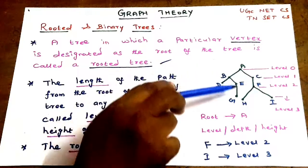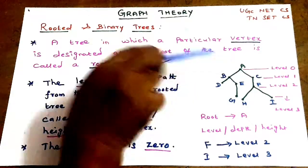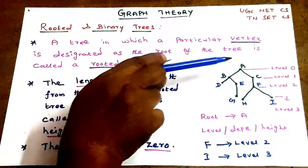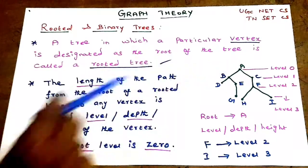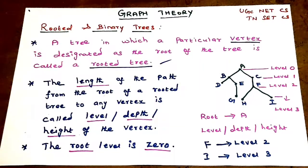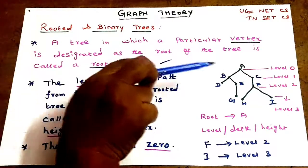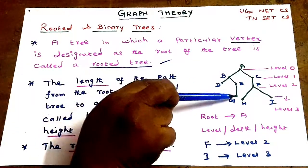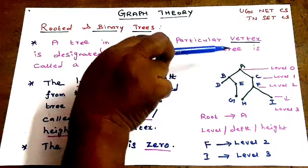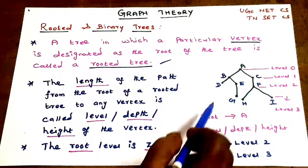The levels of a rooted tree are counted from the root. The root is at level 0, then level 1, level 2, level 3. The total number of levels here is 3.